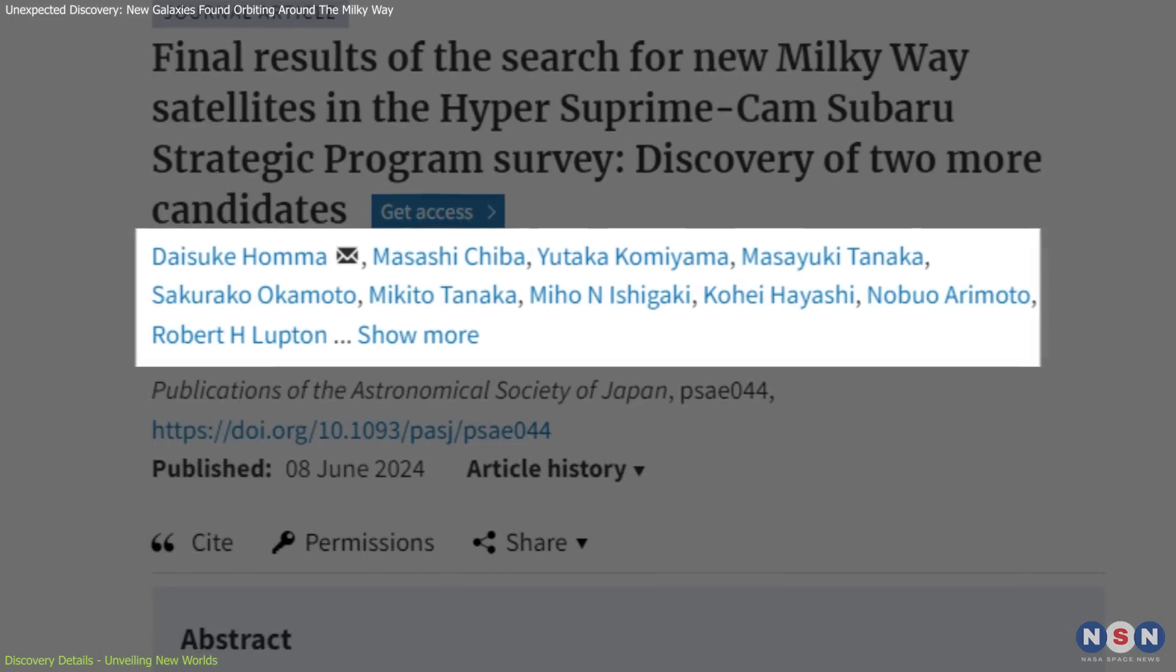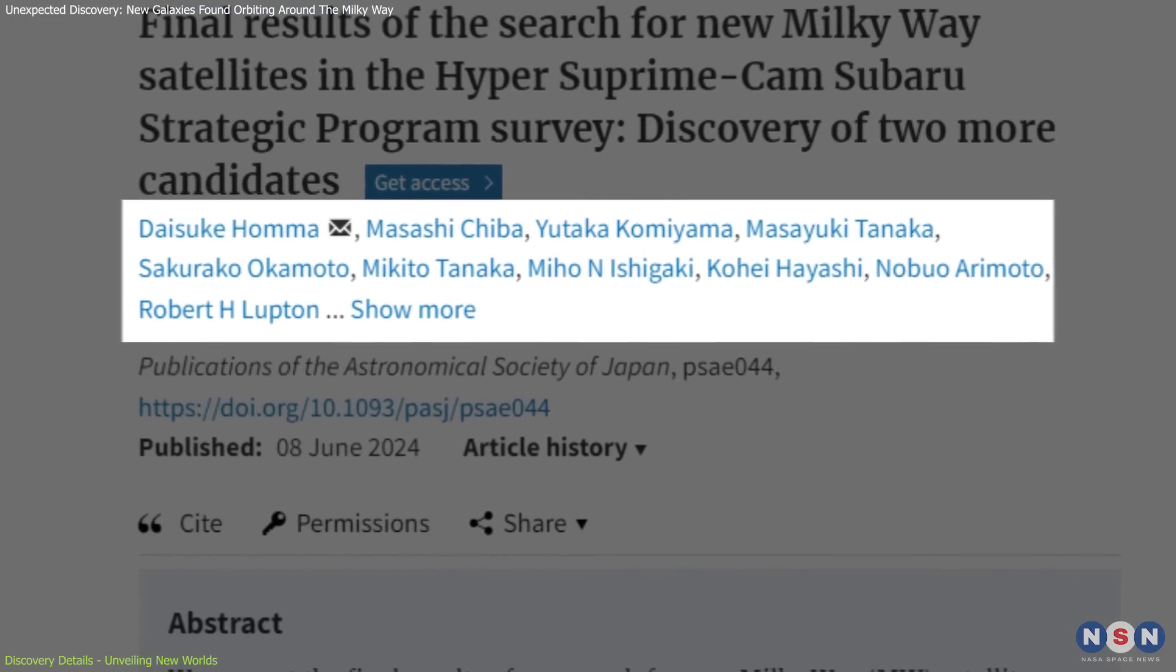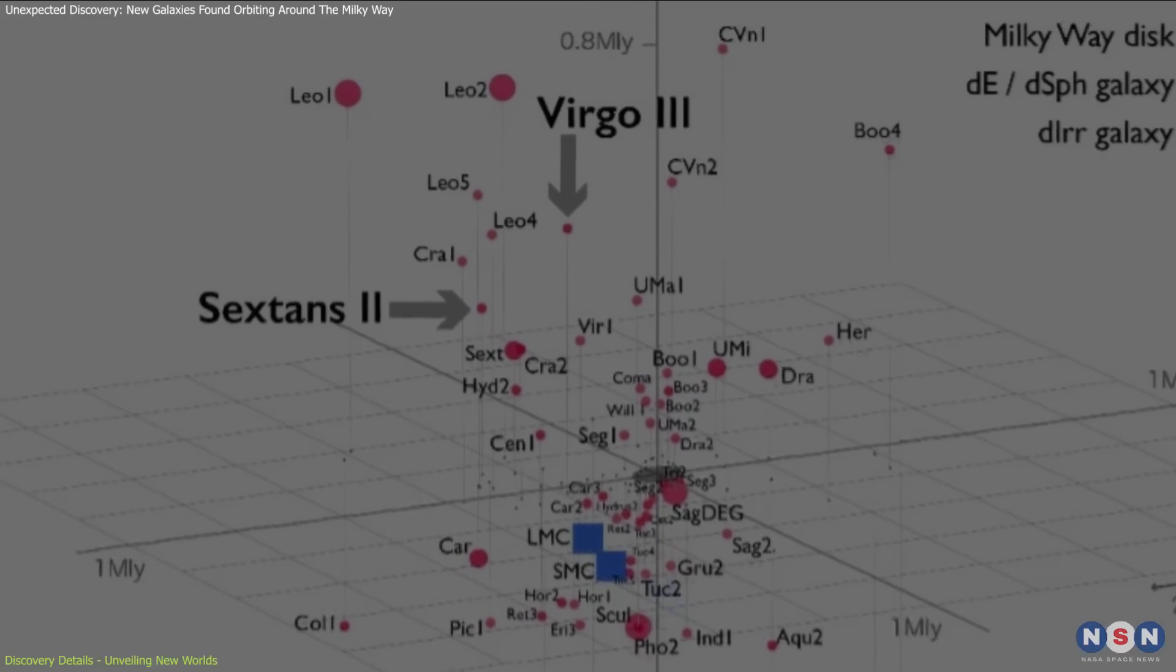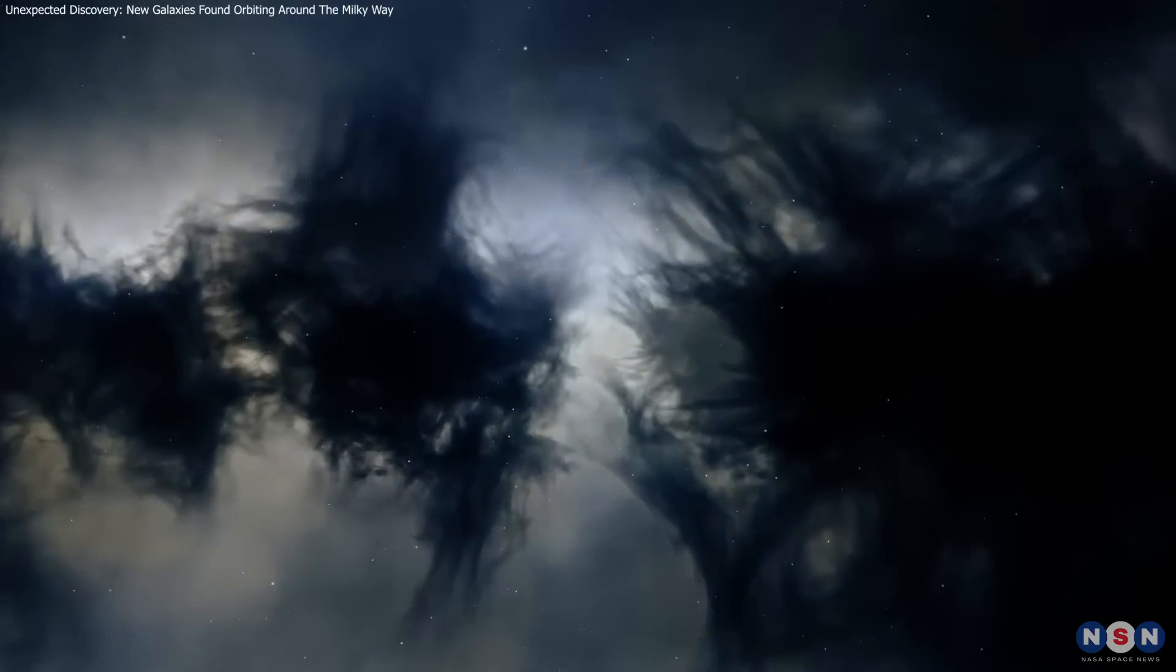Enabled by a collaborative effort between astronomers from Japan, Taiwan, and the United States, this finding enhances our knowledge of the Milky Way's satellite galaxies and the dark matter framework shaping the universe.